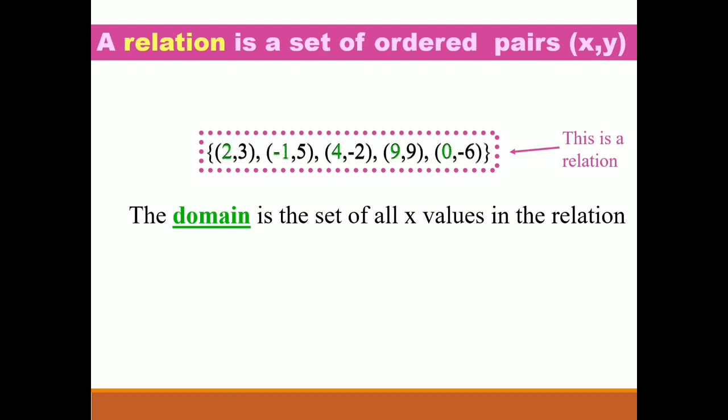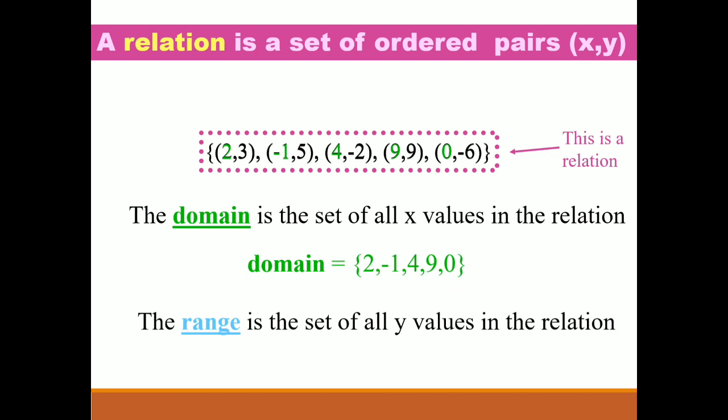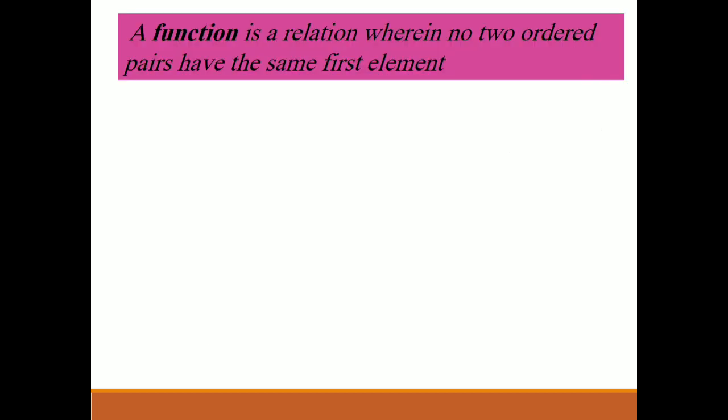From the given example, our domain is: 2, -1, 4, 9, 0. The range is the set of all y values in the relation. From the given example, our range is: 3, 5, -2, 9, -6.